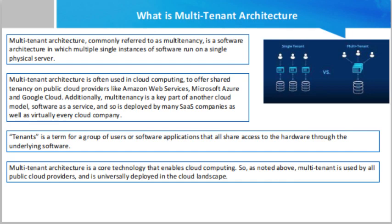The disadvantages of single-tenant architecture include: higher costs, as there is no cost sharing for things like load balancing, system monitoring, and deployment; client responsibility for software updates, patches, backup, restore, and disaster recovery; and single-tenant systems can be less efficient if they don't run at full capacity or are over-provisioned. The advantages of multi-tenant architecture include: simplified hosting — it's not your hardware to manage, reducing time and expense; reduced exposure to malicious software; and software upgrades are handled by the provider, so you always get the latest version.